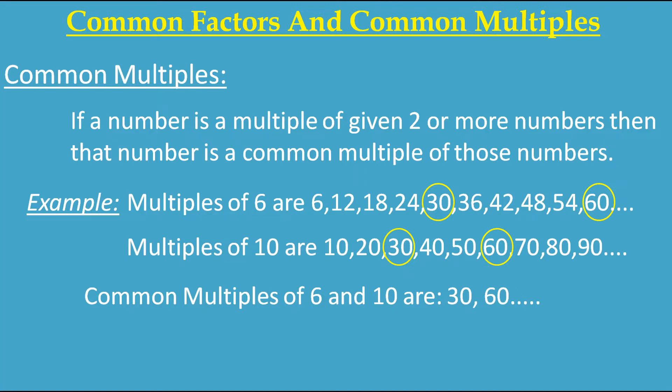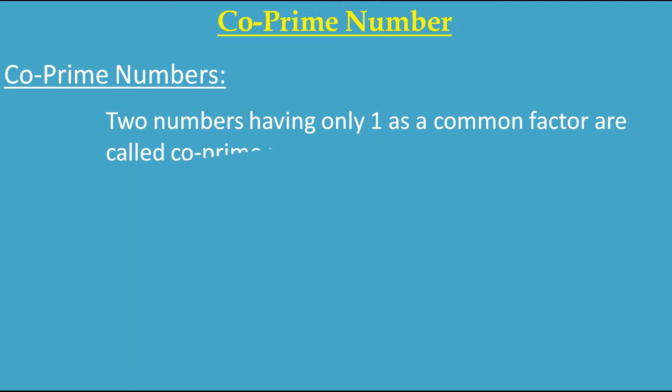Now we will understand co-prime numbers. The definition is: two numbers having only 1 as a common factor are called co-prime numbers. Now you know how to find common factors. If you are finding common factors between two numbers and you don't find any common factor except 1, then those numbers are called co-prime numbers.